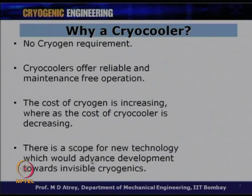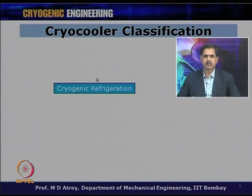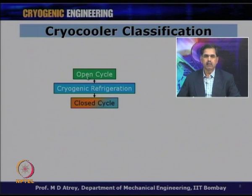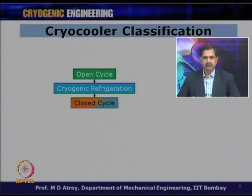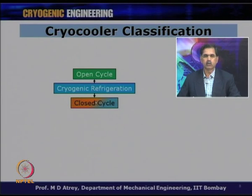Coming to cryocooler classification: cryocoolers are classified based on how cryogenic refrigeration is obtained. There are two ways — by open cycle or by closed cycle. In an open cycle, the gas or cryogen used is open to the atmosphere and is delivered to the atmosphere. In a closed cycle, the gas works in a closed cycle manner and is not released to the atmosphere. Under open cycle, we can use stored gas — for example a Joule-Thomson cryocooler — or stored cryogens.